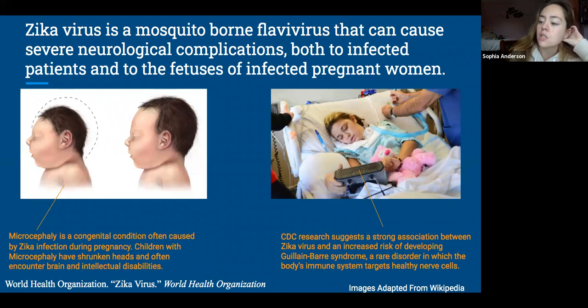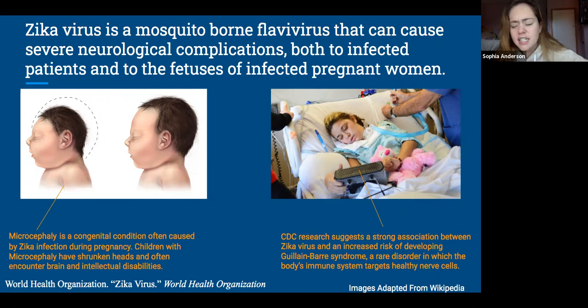The image to the right shows a young woman suffering from Guillain-Barré syndrome, a rare disorder in which the body's immune system attacks the nerves. Symptoms begin as mere weakness and tingling in the extremities but can quickly spread to full-body paralysis. CDC research suggests a strong association between Zika virus and an increased risk of developing the syndrome.